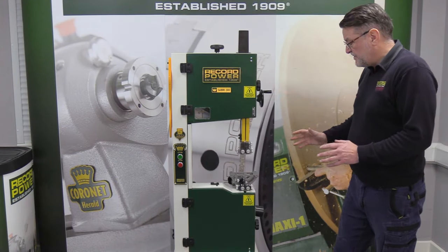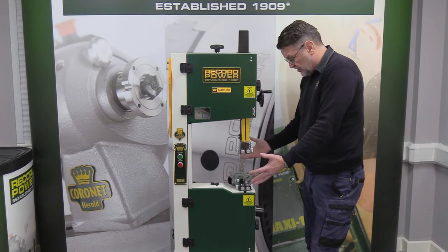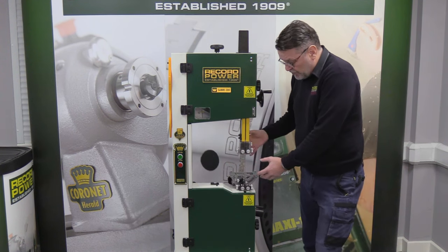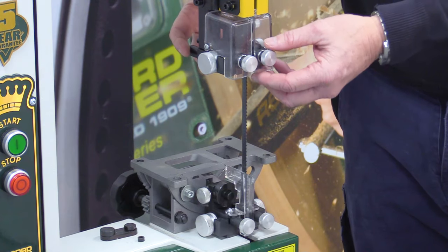So what we've done now is we've actually took the table off the machine, or off the bandsaw, to open up so you're able to see the lower and the upper guides.